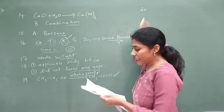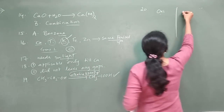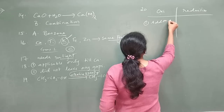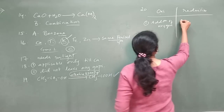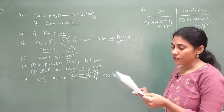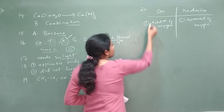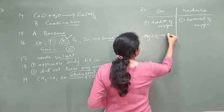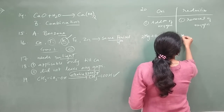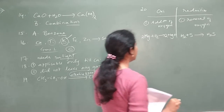Question 20: write one difference between oxidation and reduction reactions, and write an example for each in the form of a chemical equation. Addition of oxygen is called oxidation; removal of oxygen is called reduction. Example for oxidation: Mg + O₂ → MgO (write as a balanced equation). Example for reduction: H₂ + S → H₂S — addition of hydrogen, so this is reduction.